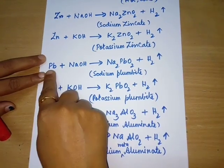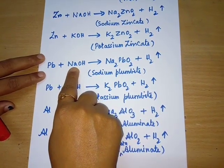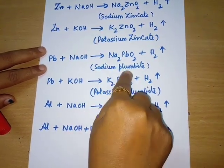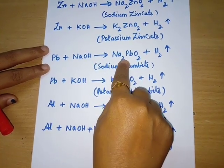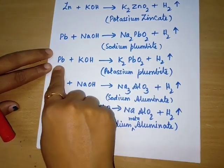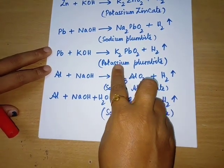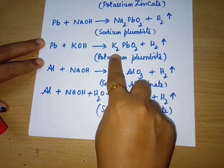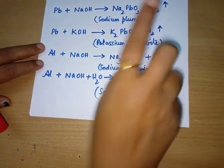Lead also reacts with sodium hydroxide forming a soluble salt called sodium plumbite (Na₂PbO₂) plus hydrogen gas. Lead also reacts with potassium hydroxide forming potassium plumbite (K₂PbO₂) plus hydrogen gas.